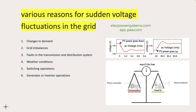Faults in the transmission and distribution system can also be a cause. Faults such as short circuits, transformer failures, or line faults can result in sudden voltage fluctuations. These faults can disrupt the normal flow of electricity and cause voltage deviations.